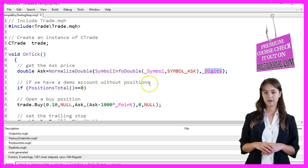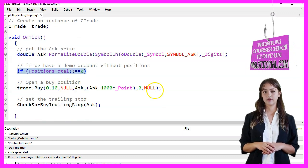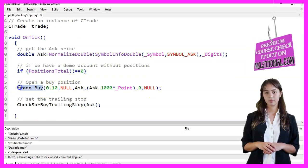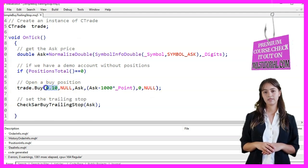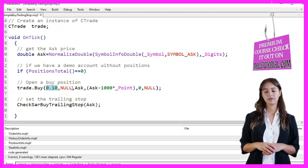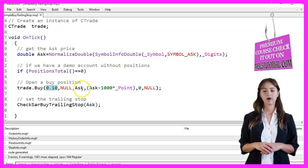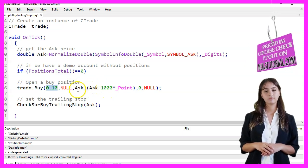We then check if there are no open positions by using PositionsTotal. If there are no positions, we open a buy position with 0.10 lots, which means 10 microlots. The Trade.buy function is used for this purpose, with parameters specifying the Volume, Symbol, Null for the current symbol.